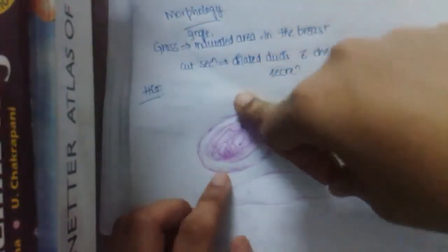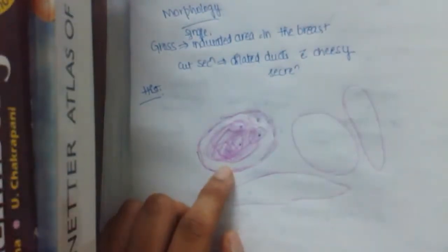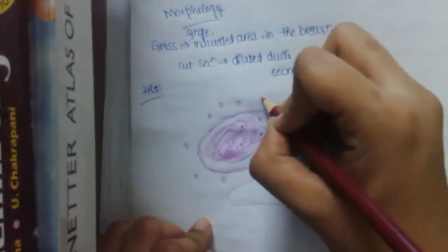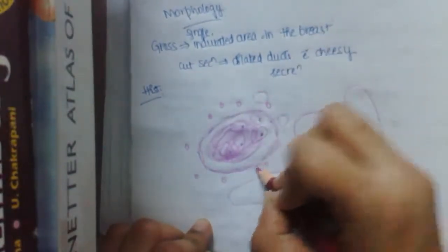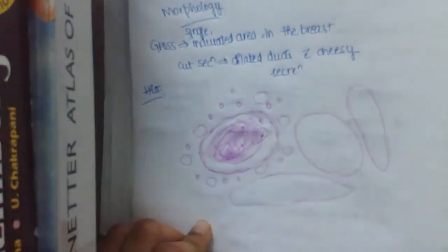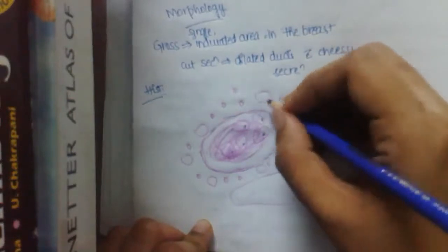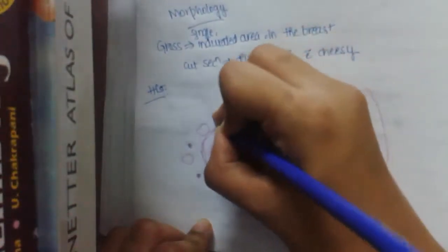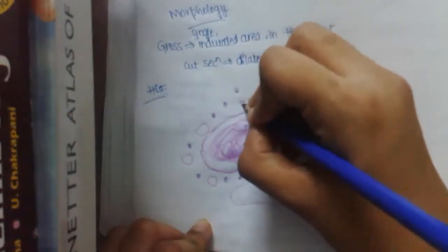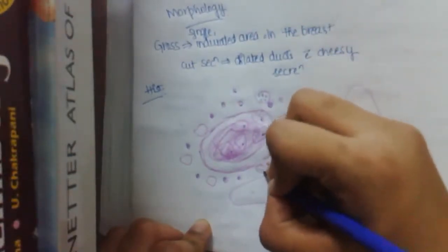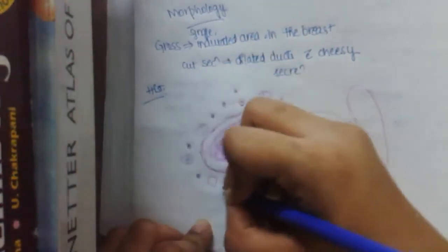Then, the periductal region around these ducts are surrounded by chronic inflammatory cells, basically lymphocytes. These are lymphocytes. Next, giant cells which are multi-nucleated. These are giant cells. And then, sometimes plasma cells may be present. These are plasma cells. Now, to differentiate, the nucleus of the lymphocytes is round. Plasma cell is nothing but a lymphocyte. These giant cells are multi-nucleated. All these are multi-nucleated giant cells.